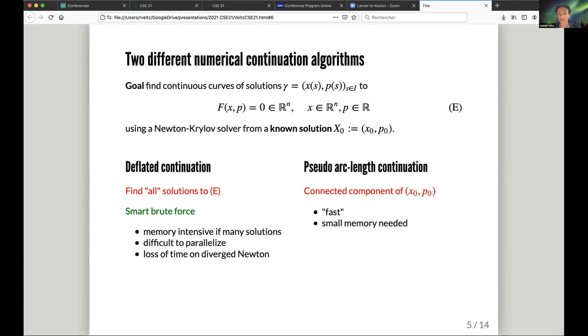So the pros and cons: the pro of deflated continuation is it gives you a lot of solutions, but it's memory intensive with many solutions, it's difficult to parallelize, and you lose a lot of time on diverged Newton - on Newton that does not converge. Pseudo arc-length basically doesn't give you all solutions, but it's fast and you don't need that much memory.